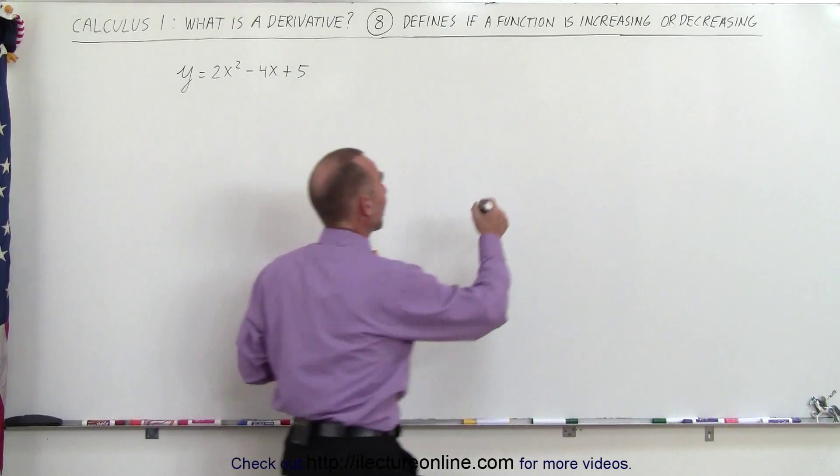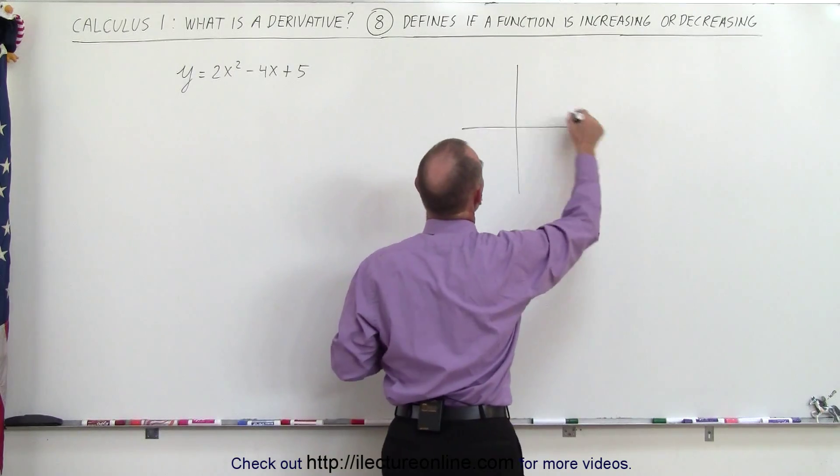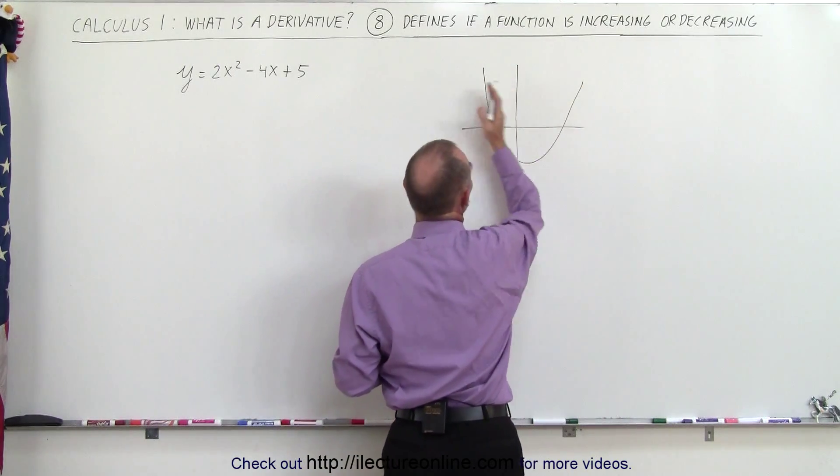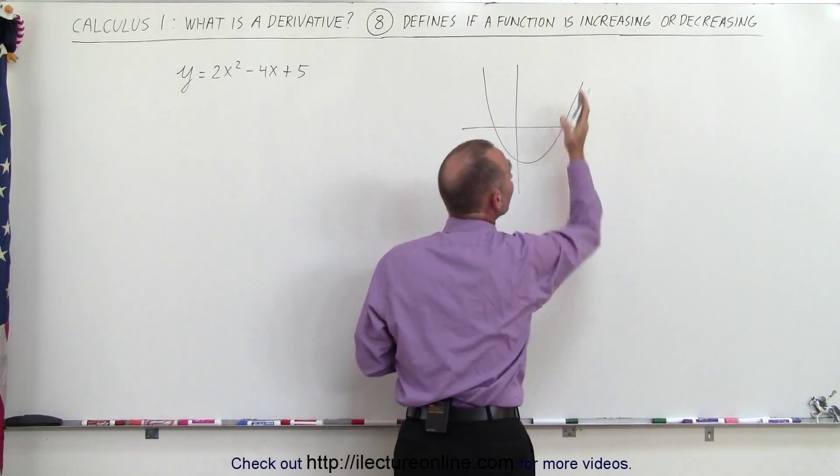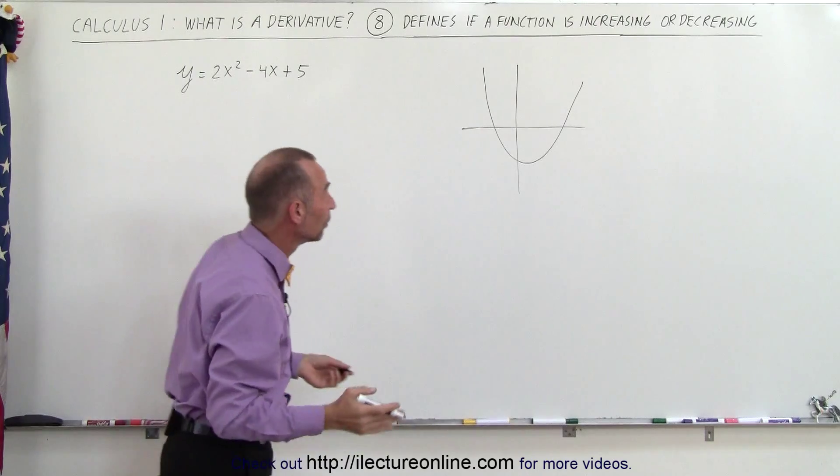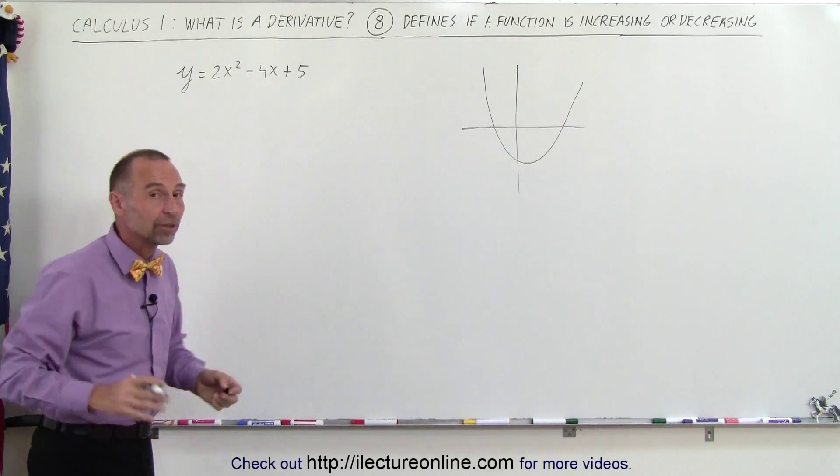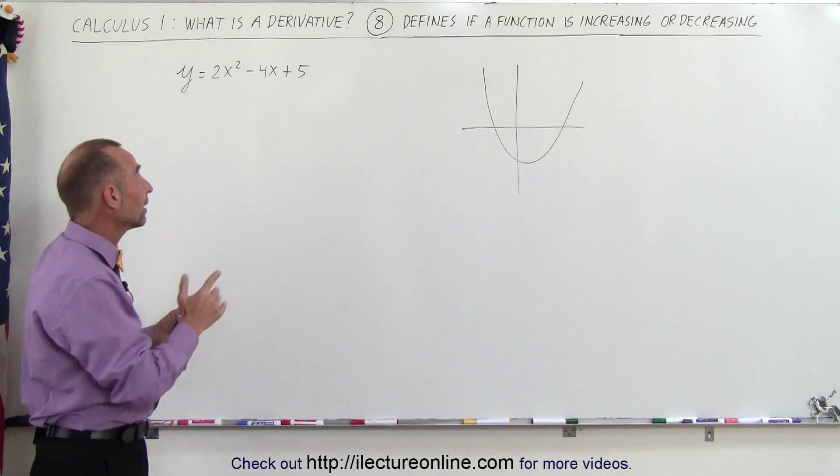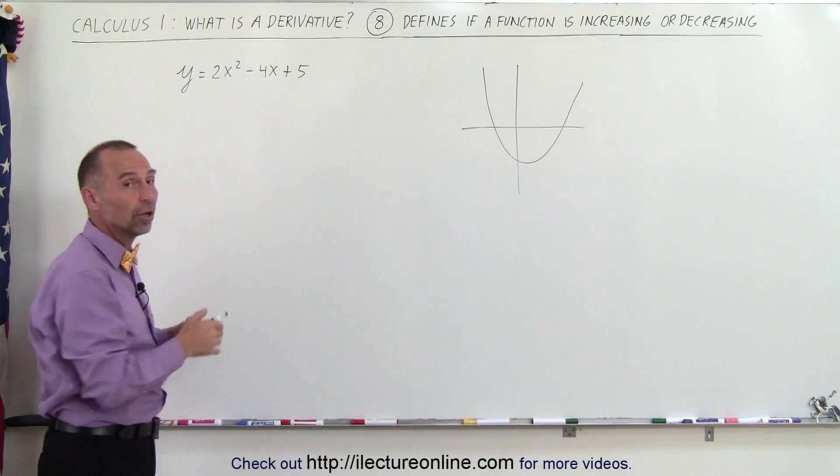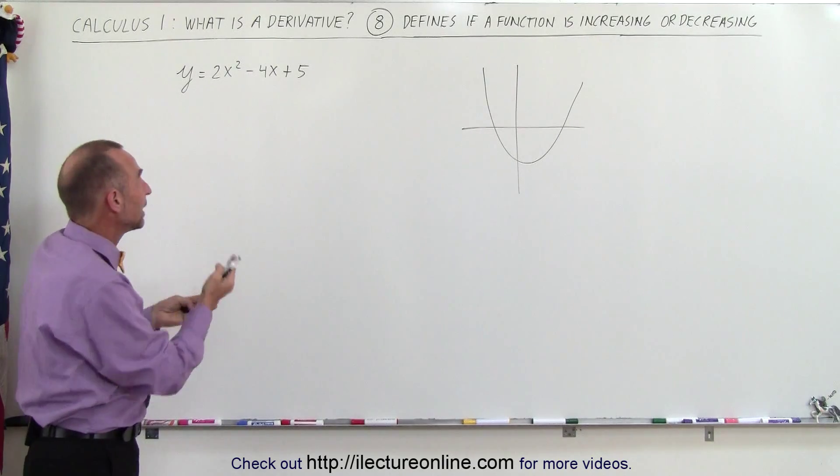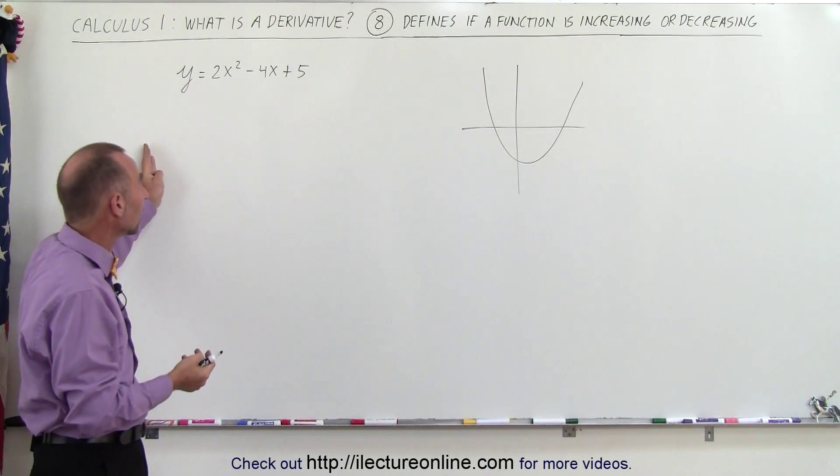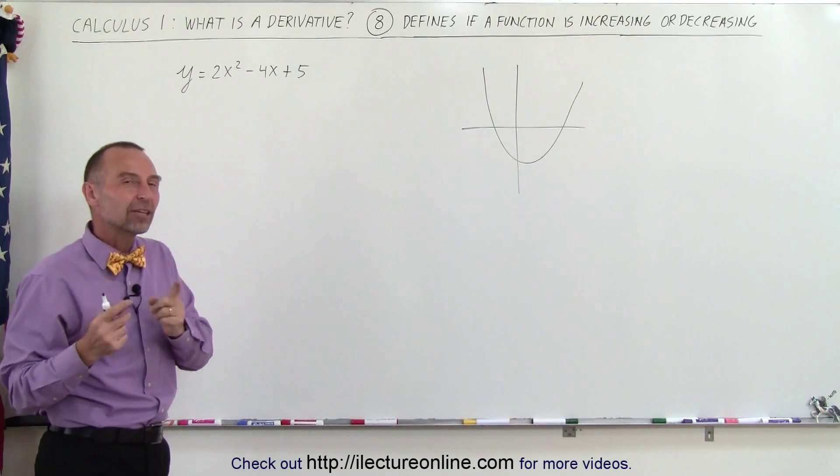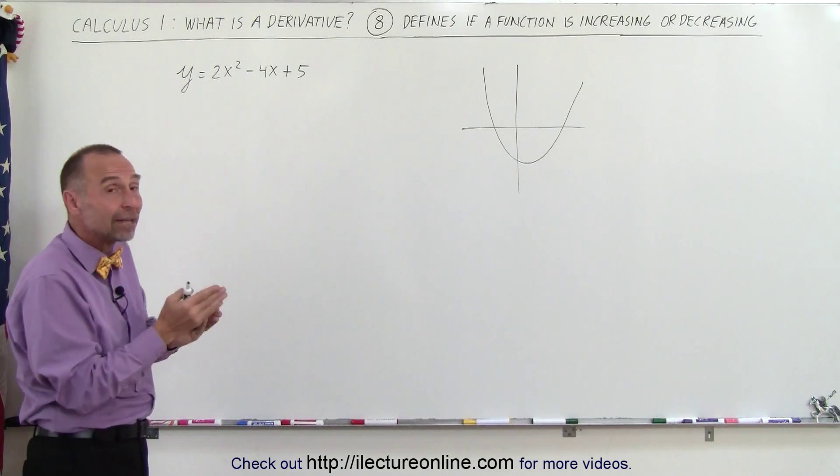For example, if you have a function that looks like this, you can see that to the left here the function is decreasing with a negative slope, and to the right the function is increasing with a positive slope. Not knowing exactly what this function looks like, I do know that this is a parabola that opens upward. So to the left the function will be decreasing, to the right the function will be increasing. Finding the derivative will help me find where it is increasing, where it's decreasing.